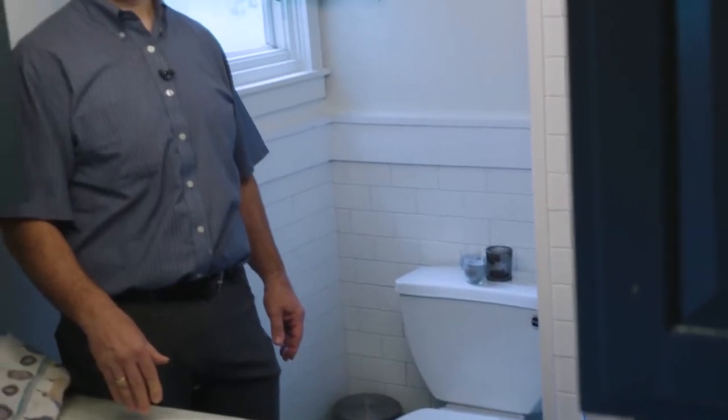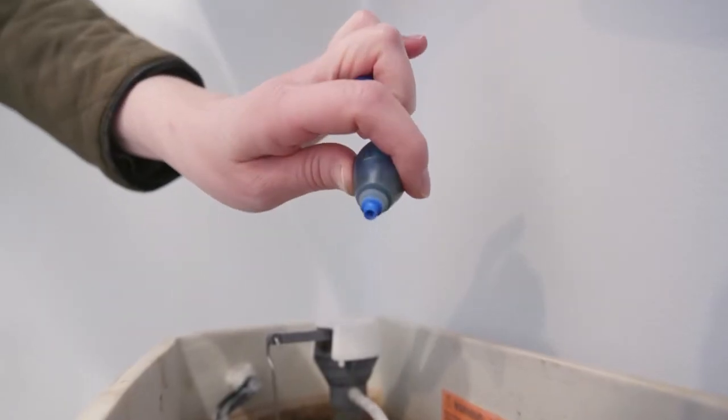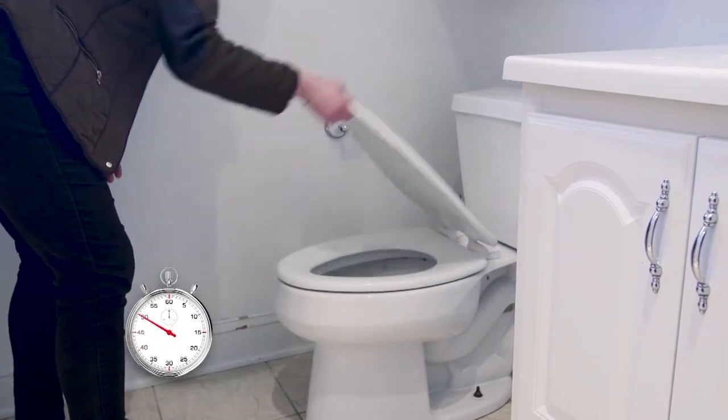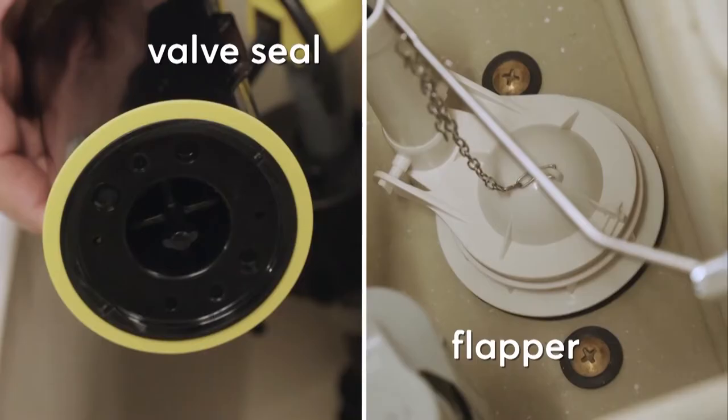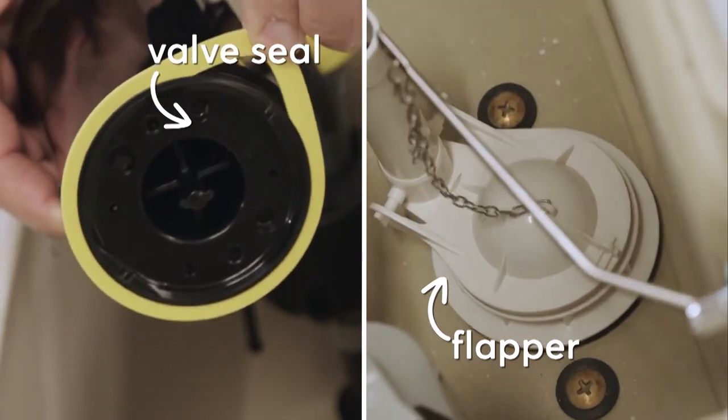One of the biggest wastes of water can be your toilet, and you may not even know it. To check for leaks inside the tank, add a few drops of food coloring to the tank. Wait 15 minutes. If the food coloring ends up in the toilet bowl, you have a leak. Depending on the toilet, you may need to replace the valve seal or the flapper.